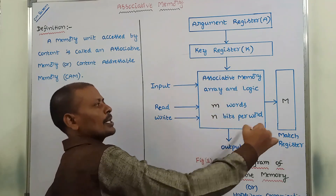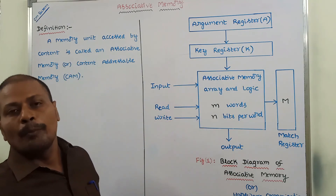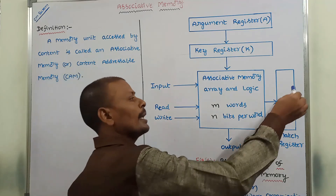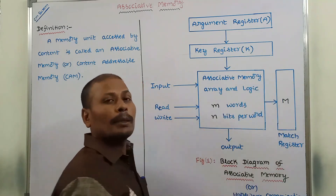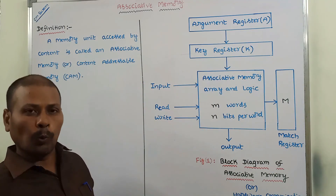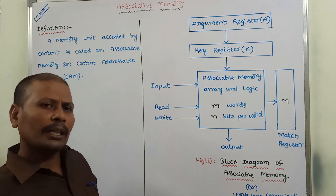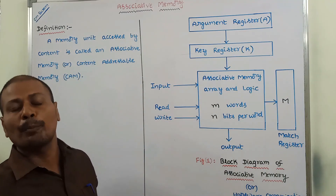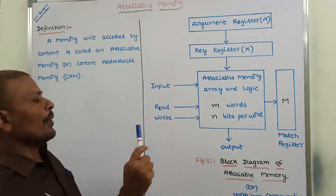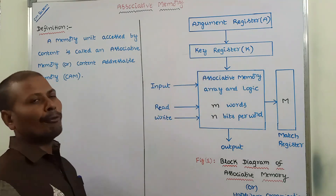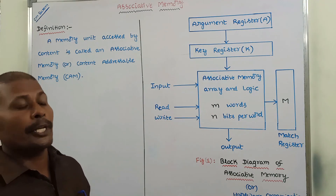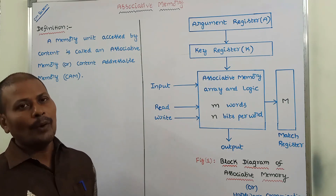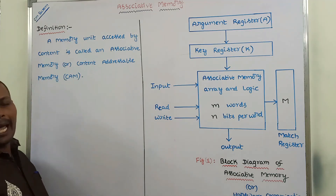If multiple matches are occurred, then the corresponding word in the match register is set to 1. If a match is not occurred, then the corresponding word in the match register is set to 0. In this way, we perform the matching operation based on the content, not by an address. Now we can go for one example. Bye-bye.